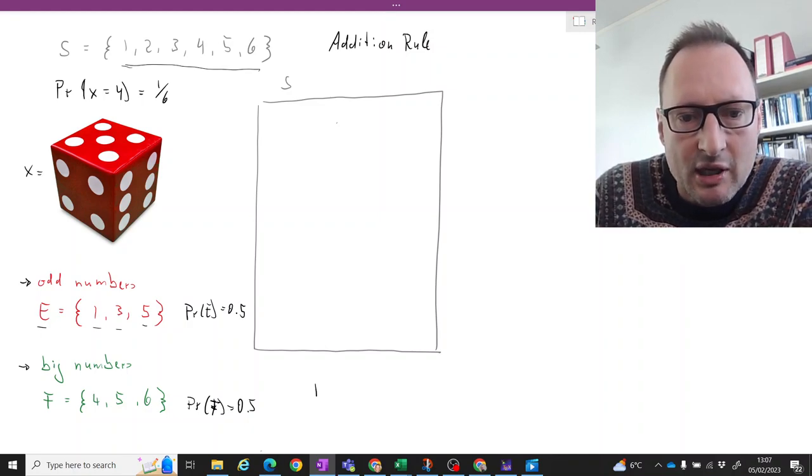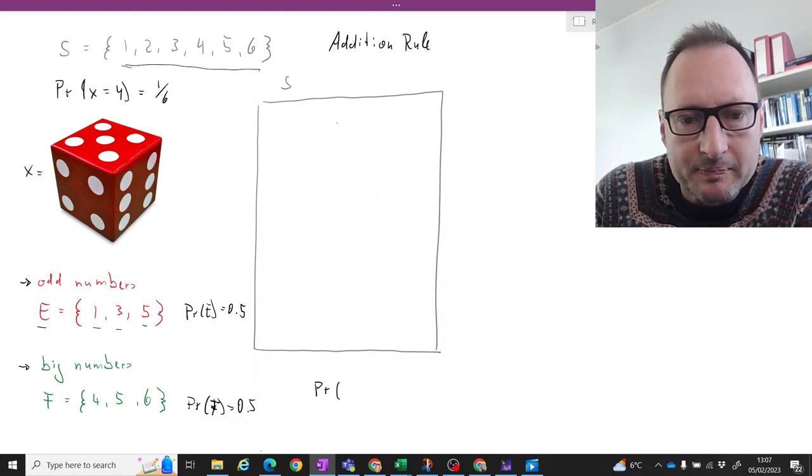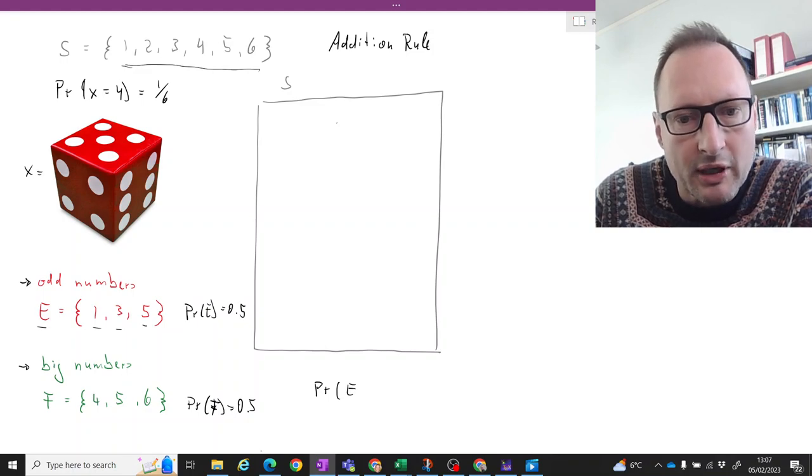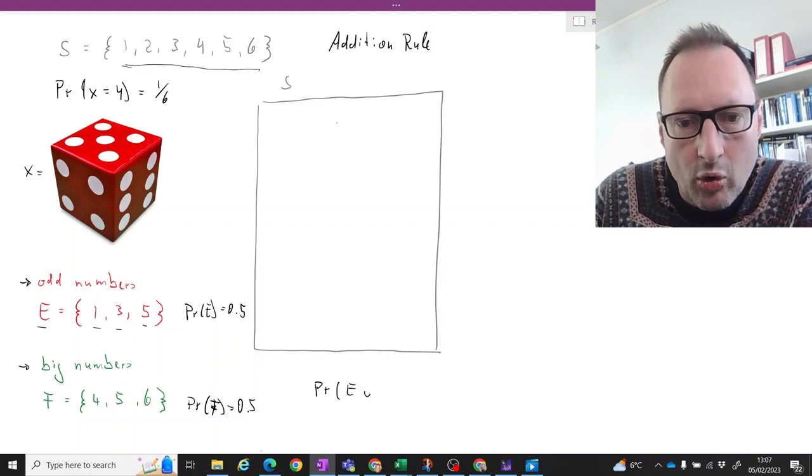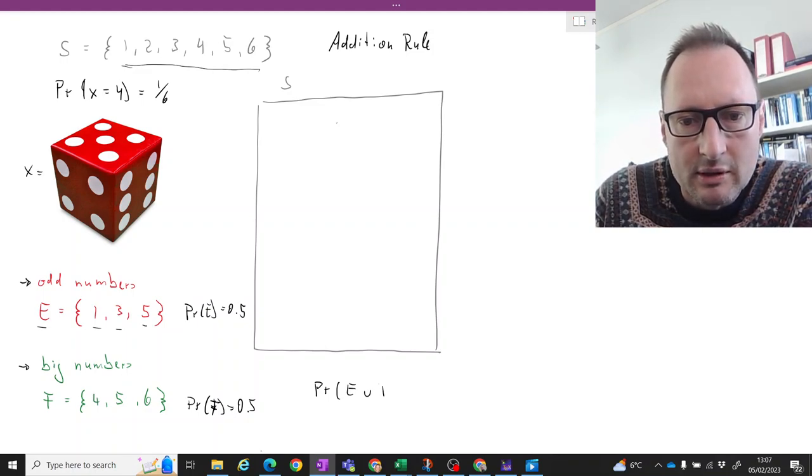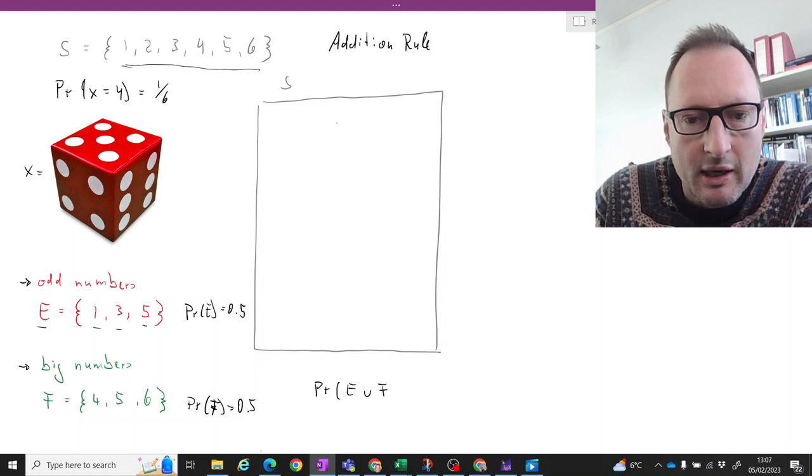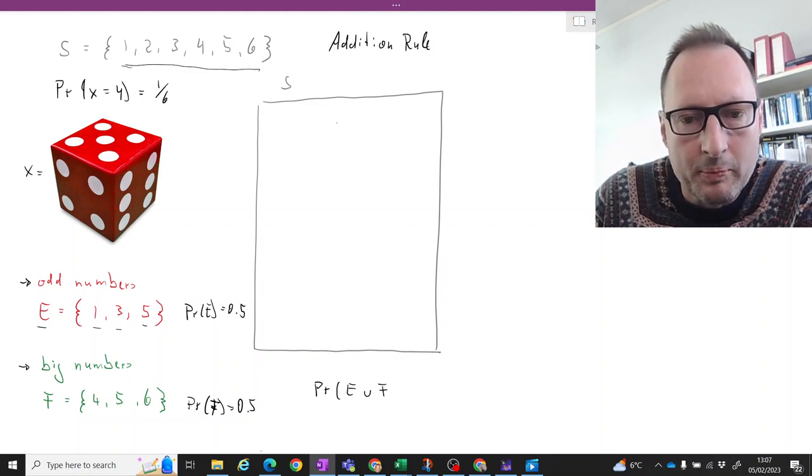So now the question is, what is the probability that the outcome is either odd or F? It's either odd or big.